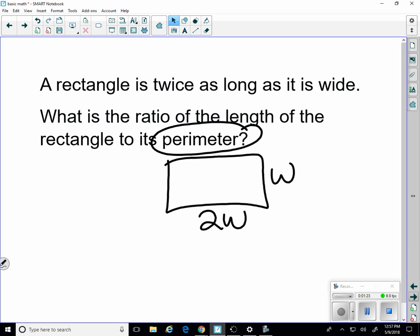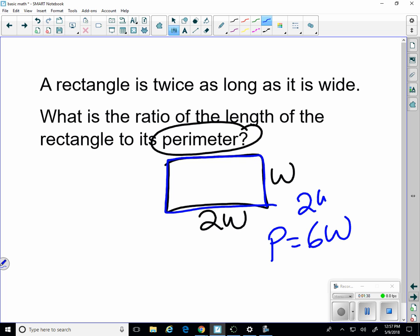So let's change colors and go around. Here's W. Two more W. So that's 3. One more 4. And two more 6. So the perimeter equals 6W. Let's compare that to the length. The length is 2W. Compare those. W's fall out. 2 over 6 is the same as 1 third, or 0.33 is close enough.